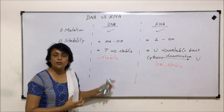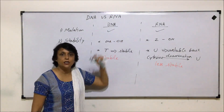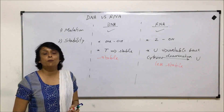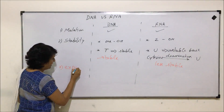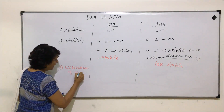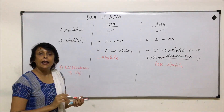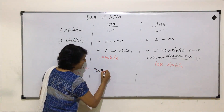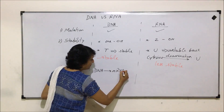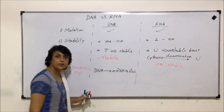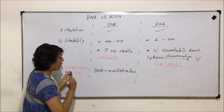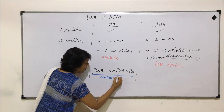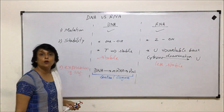At this point DNA looks like a more promising molecule for genetic material. The third point on which we want to compare them is expression of the information. The information is present on DNA and goes from DNA to mRNA, and from mRNA to protein synthesis. This method of expression — from DNA to protein — is known as the central dogma, a concept given by Crick.